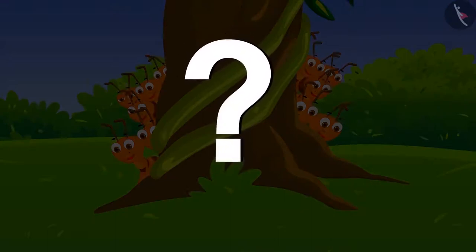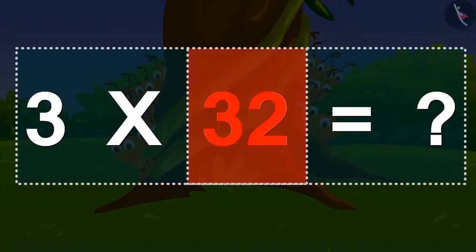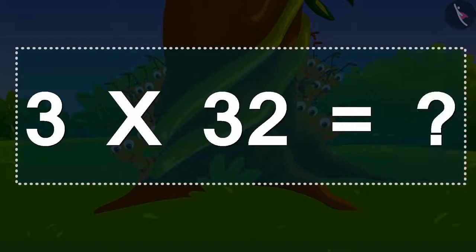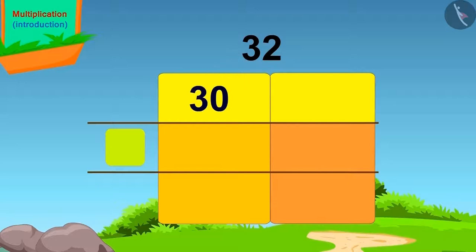Can you tell how many ants there were in all? How do we write it in the form of multiplication? Three times 32. But we do not know the multiplication table of 32. What do we get if we split 32 into 30 and 2?